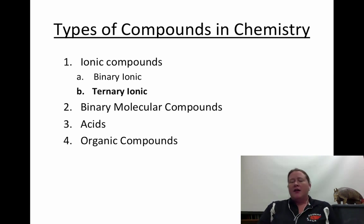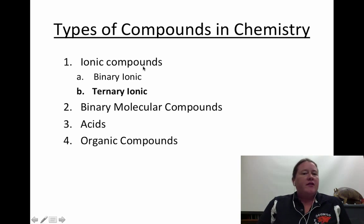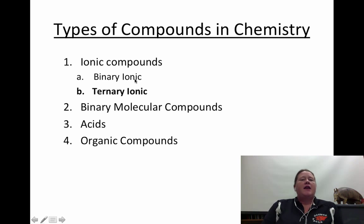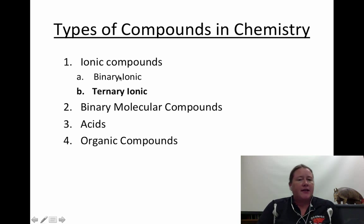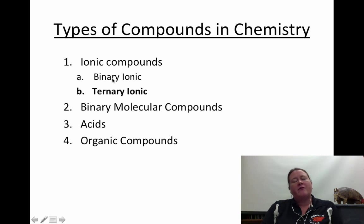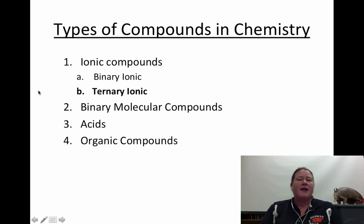A little bit of review. In a previous installment I talked about binary ionic compounds, which contain two elements. The first element is a metal, the second element is a nonmetal, and the names are pretty simple — just the name of the metal followed by the name of the nonmetal ending in IDE.